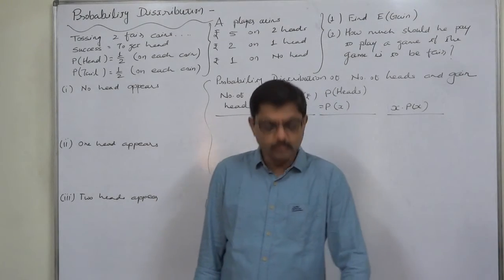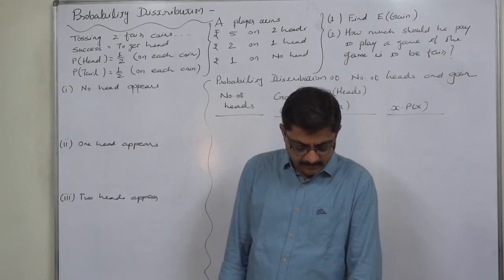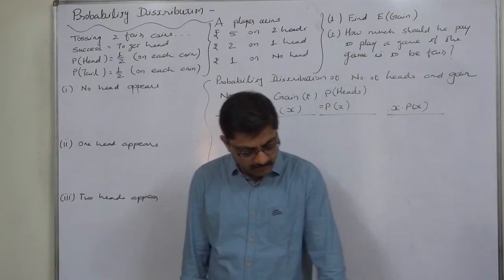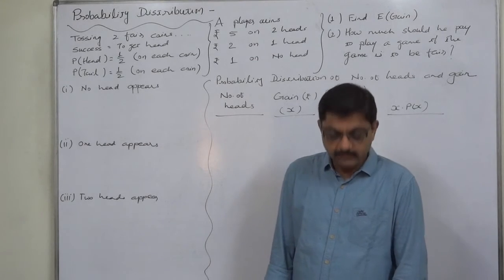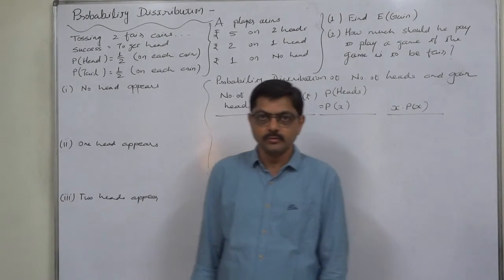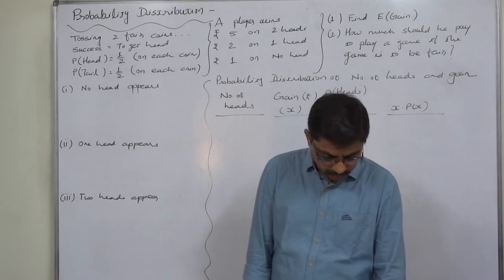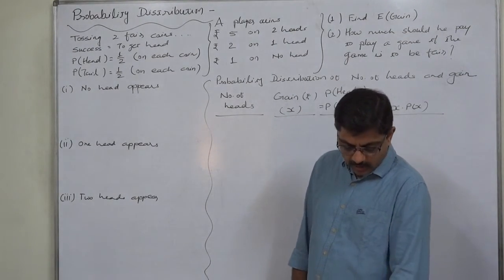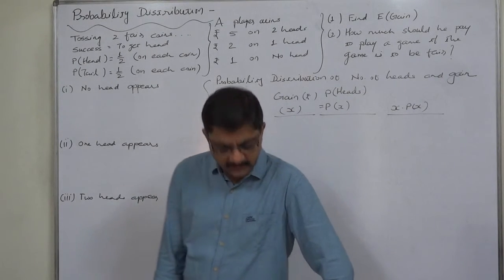He wins rupees five if two heads appear, rupees two if one head appears, and rupee one if no head occurs. Even if no head occurs, he wins rupee one. Number one: find his expected gain. Number two: how much should he pay to play the game if it is to be fair?